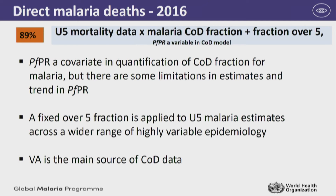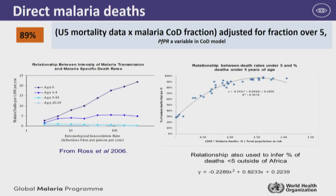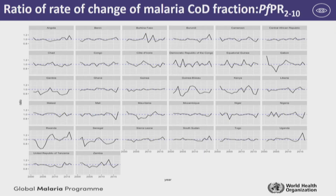The mortality estimates have important limitations related to the covariates used, corrections for over-fives, and the inherent problems of verbal autopsies. The data used for corrections for over-fives is really poor and extremely old. The relationship between parasite prevalence — the main covariate in the cause-of-death fraction — and that fraction shows significant divergence by country from what would be expected, largely because year-on-year smoothing in the cause-of-death quantification process affects the malaria-attributable deaths that come out of this model.